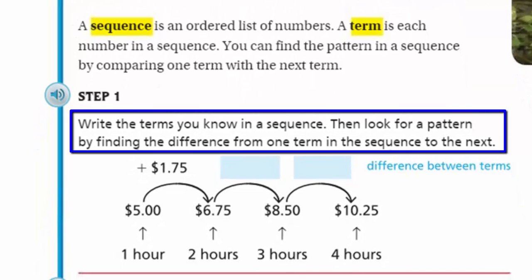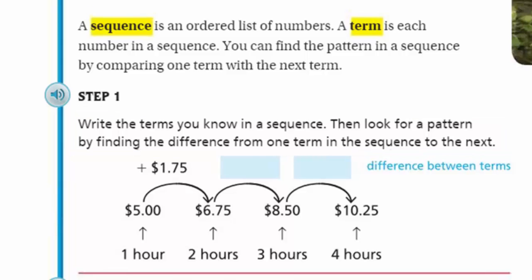It's step one. Write the terms you know in a sequence. Then, look for a pattern by finding the difference from one term in the sequence to the next. It's helping us out here. Well, that first hour was $5. There it is. And it says at the top, it says if you add $1.75, you'll arrive at that new amount of $6.75. Yes, that's mental math. And then, it goes from $6.75 to $8.50.